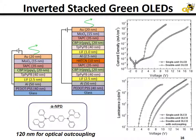Here are our stacked green OLED results that we published. We stacked two of the single unit green OLEDs vertically with a lithium fluoride / aluminum / HAT-CN connecting layer, as shown in the right graphic. The J-V curves are shown in the upper right, and in the bottom right are the luminance-voltage characteristics.